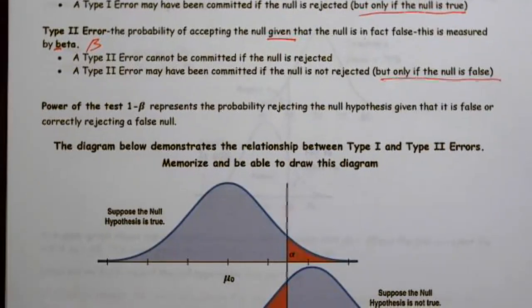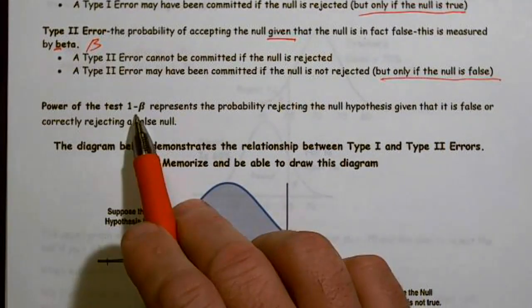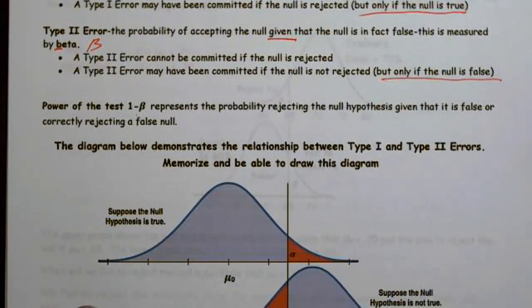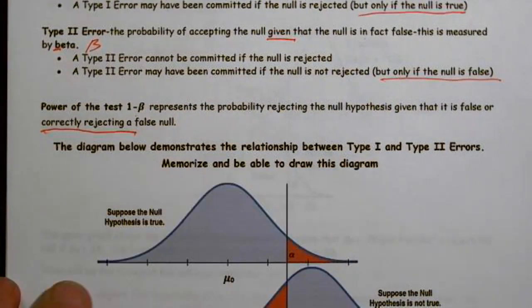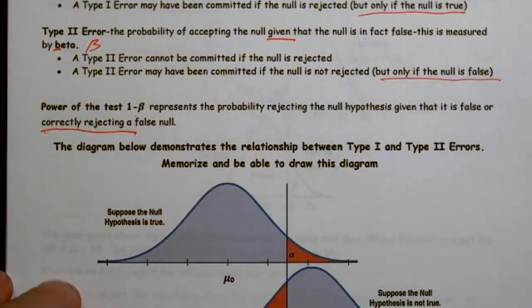And once again, power of the test is one minus beta and represents the probability of rejecting the null given that it is false. In other words, this is a correct decision. We rejected and it was correct. So power of the test is the probability of correctly rejecting.